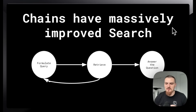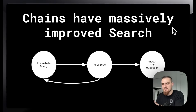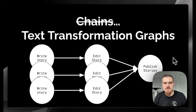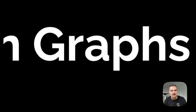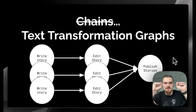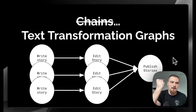Chains have also massively improved search capability. We have things like multi-hop question answering where we formulate a query, then retrieve in a loop and pass that context in to answer the question. We use language models to populate a filter on our search, re-rank documents with large language models. As LLM chains evolved, it became more clear that a better abstraction was to think of these as graphs. We now have LangGraph, and I think of these as text transformation graphs — as we have these graphs of computation, the edges pass along a transformation of the text.